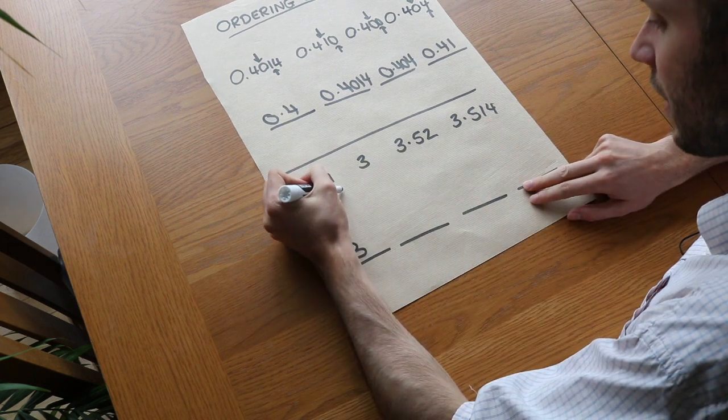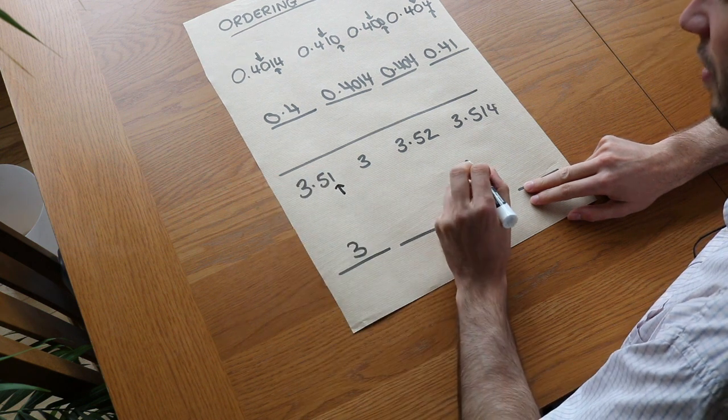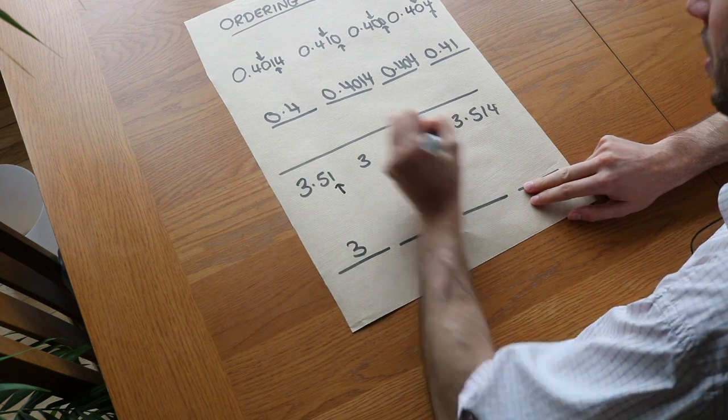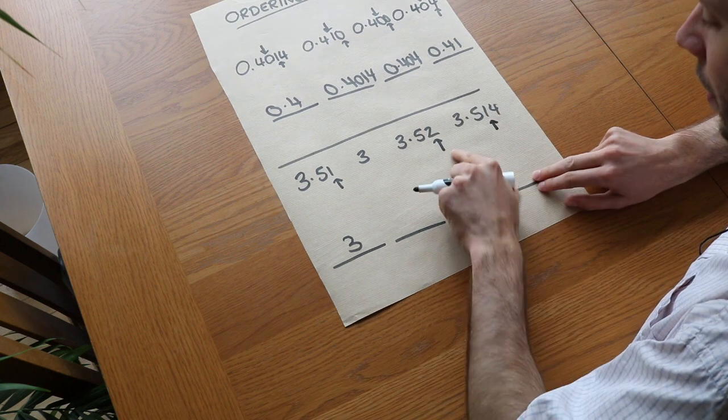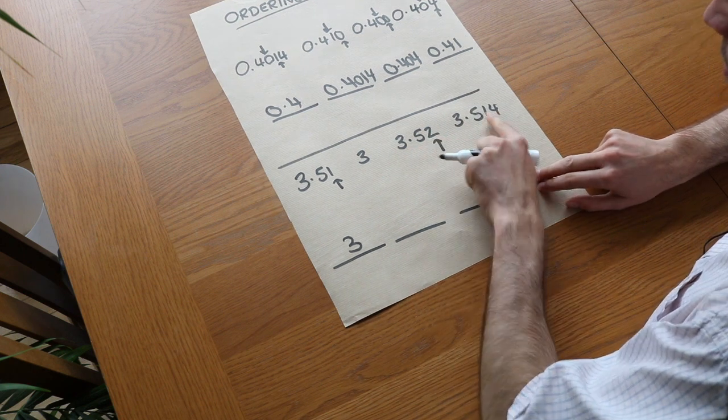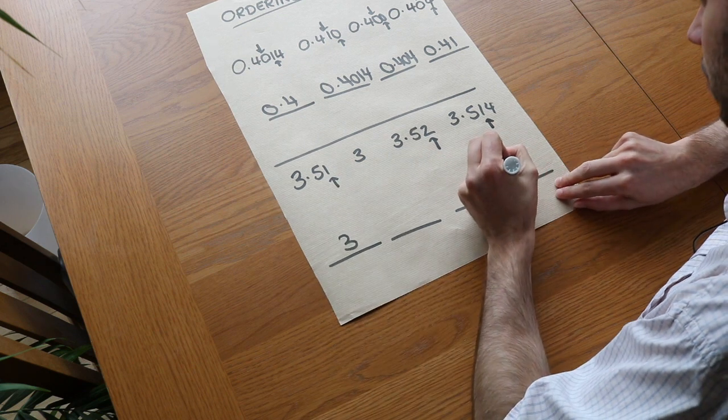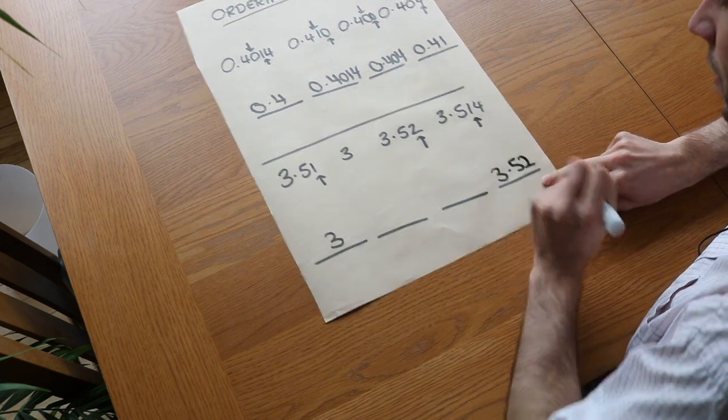But as soon as we look at the hundredth digit that yields information. So hundredth digit is one, hundredth digit is two, hundredth digit is one, so we know that this one is going to be the largest because two is bigger than the ones, so we've got 3.52 as the last one.